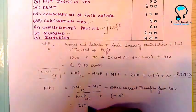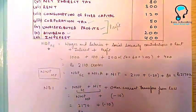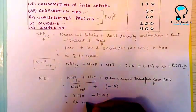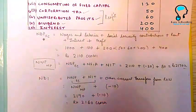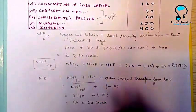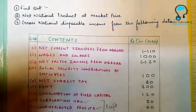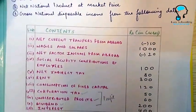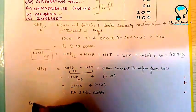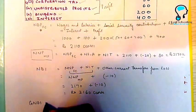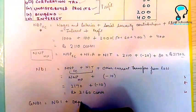Net current transfers from abroad is minus 10, so national disposable income = NNP MP 2170 + (−10) = rupees 2160 crores. We are asked for gross national disposable income, so we add depreciation: gross national disposable income = national disposable income plus depreciation.